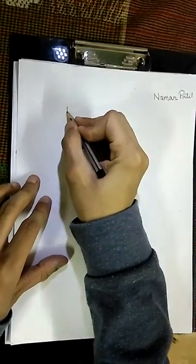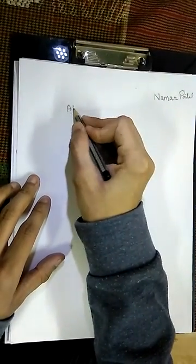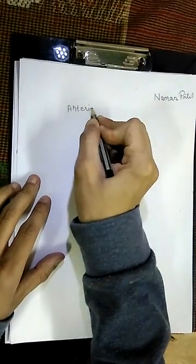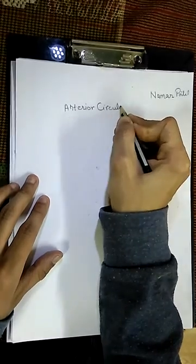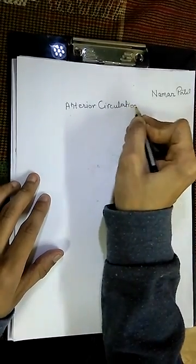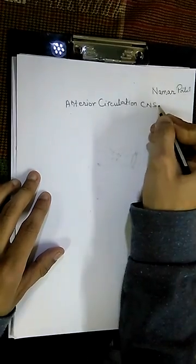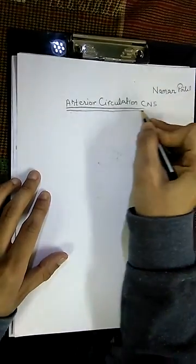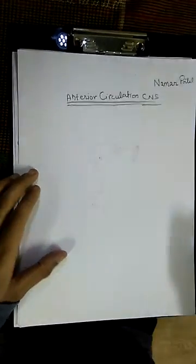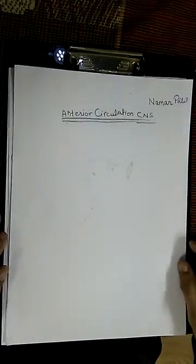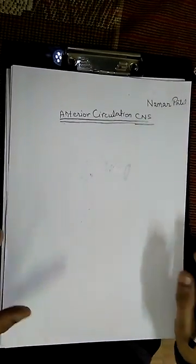Hello guys, my name is Naman Patel and in this video we are going to discuss about the CNS, the blood supply to the CNS, and specifically the anterior circulation of the CNS. It is also known as the carotid circulation of the CNS because the internal carotid artery plays a very major role in the anterior circulation.